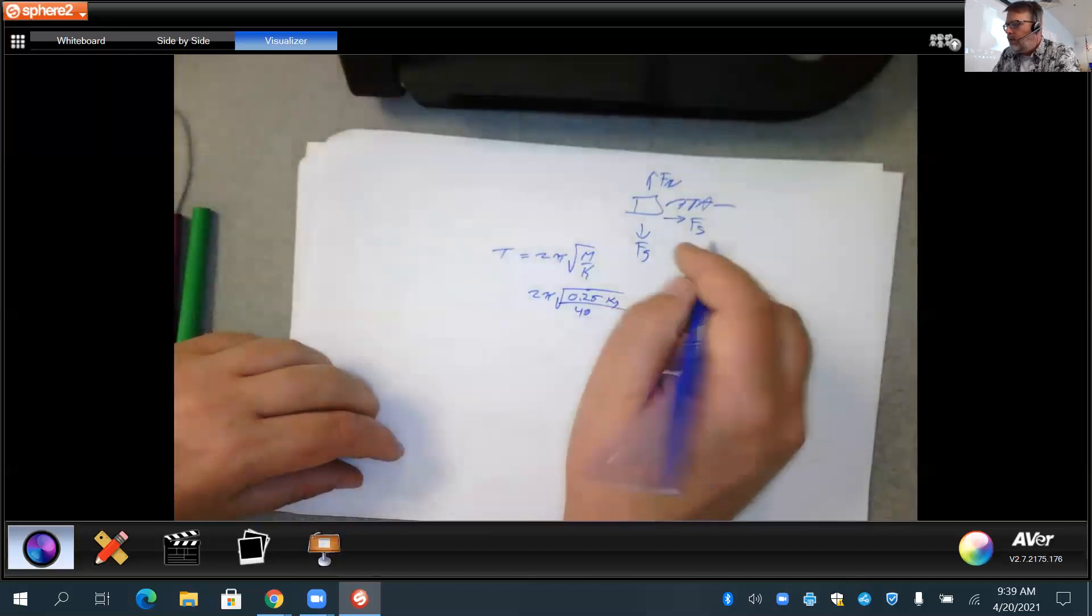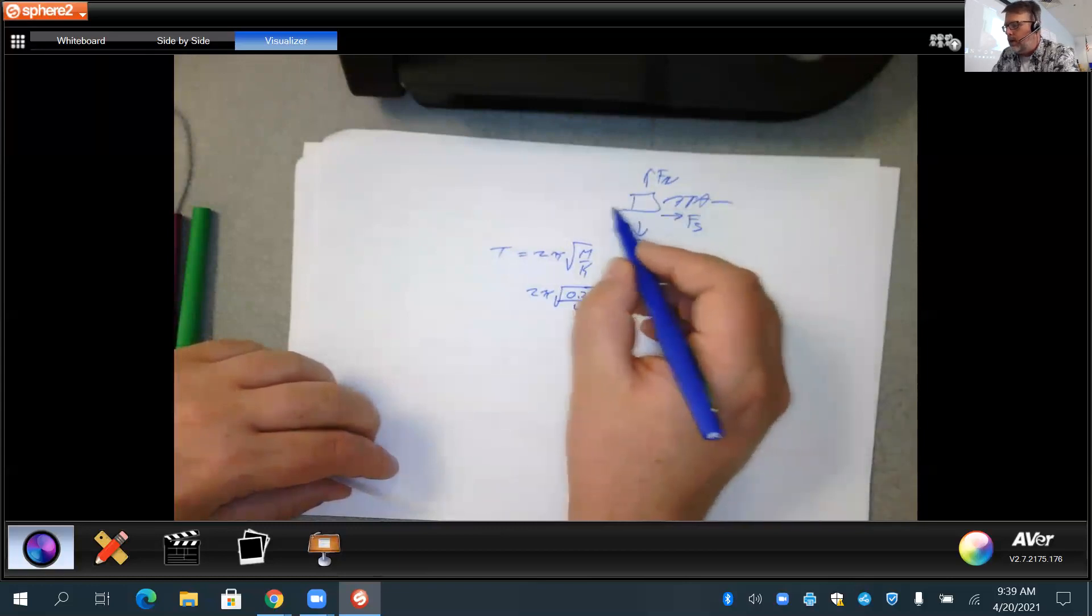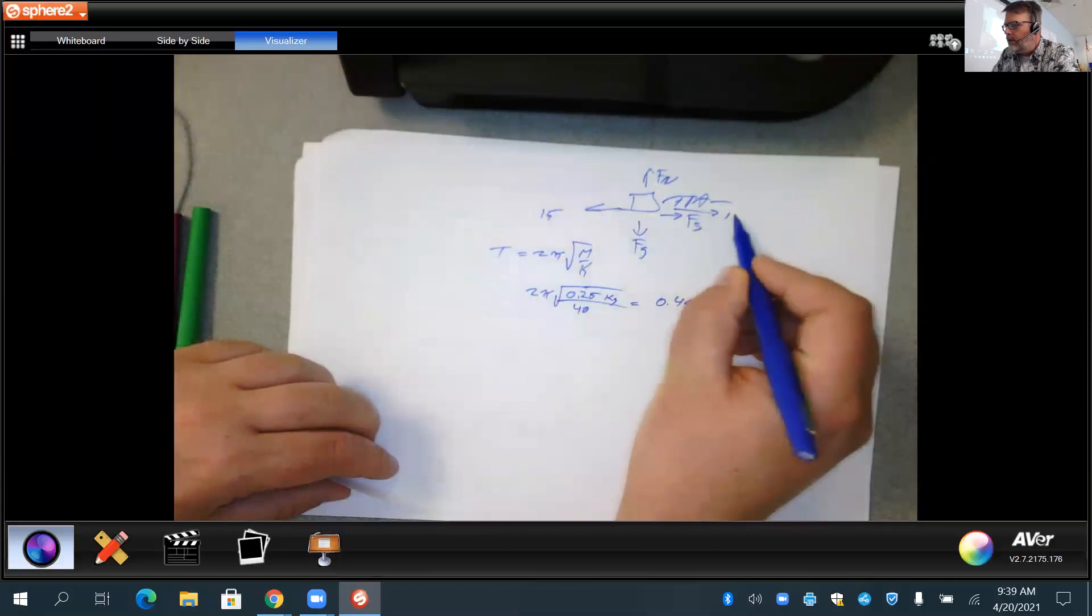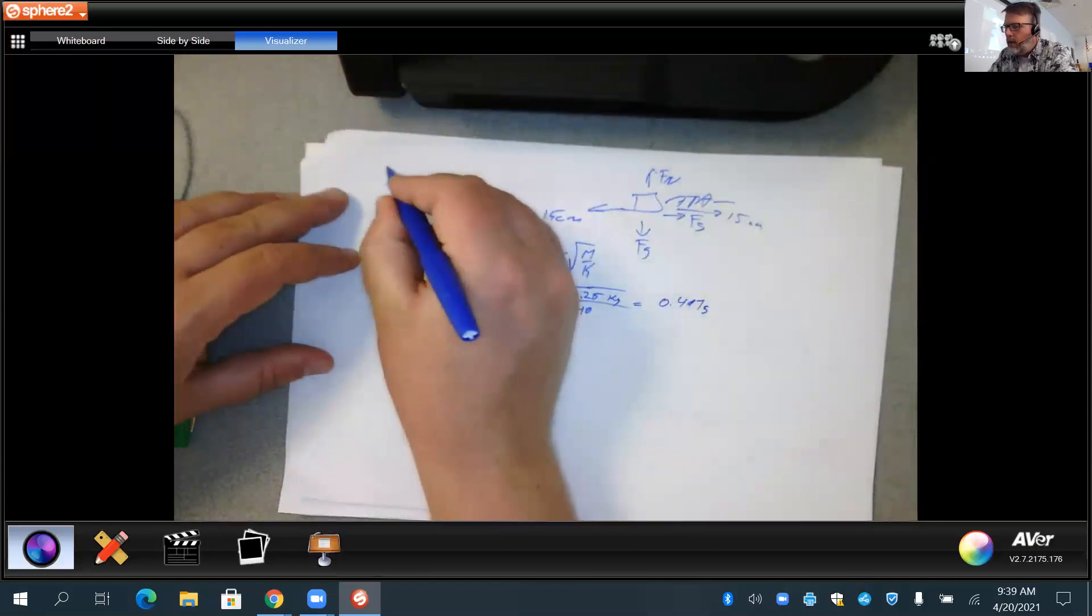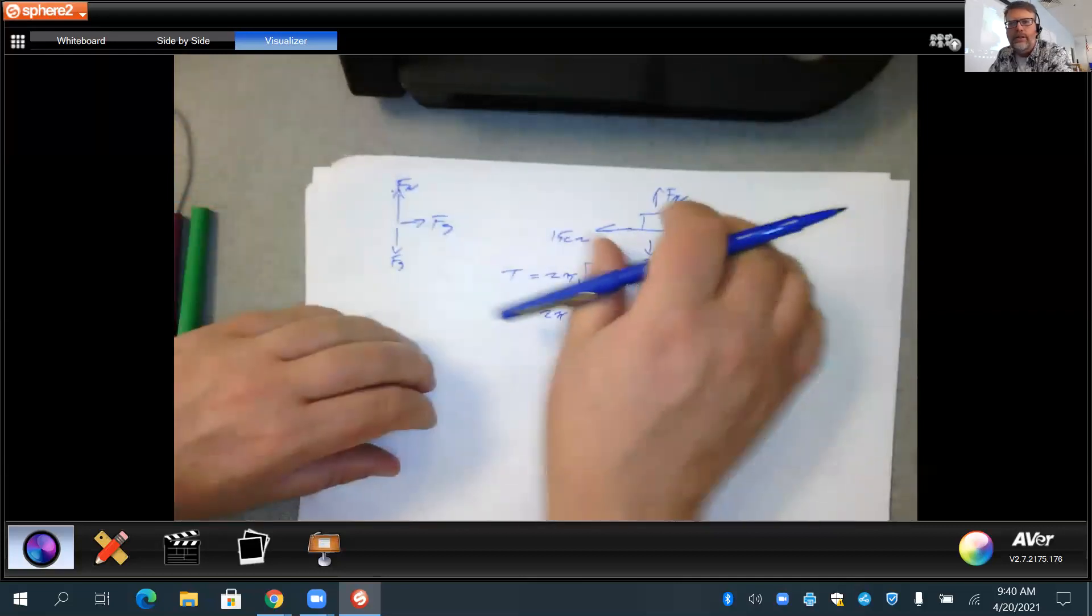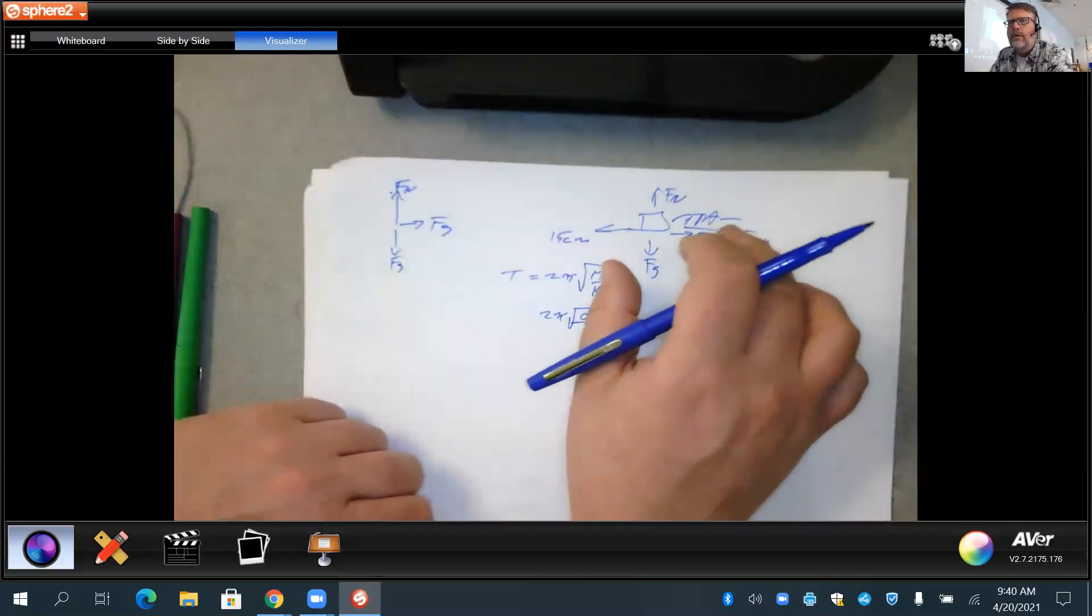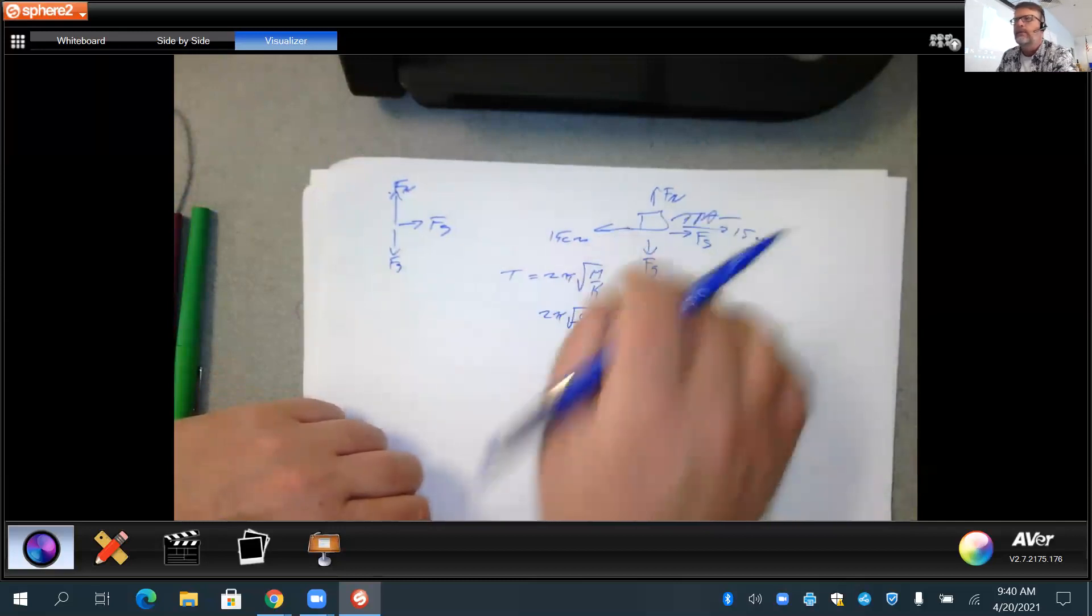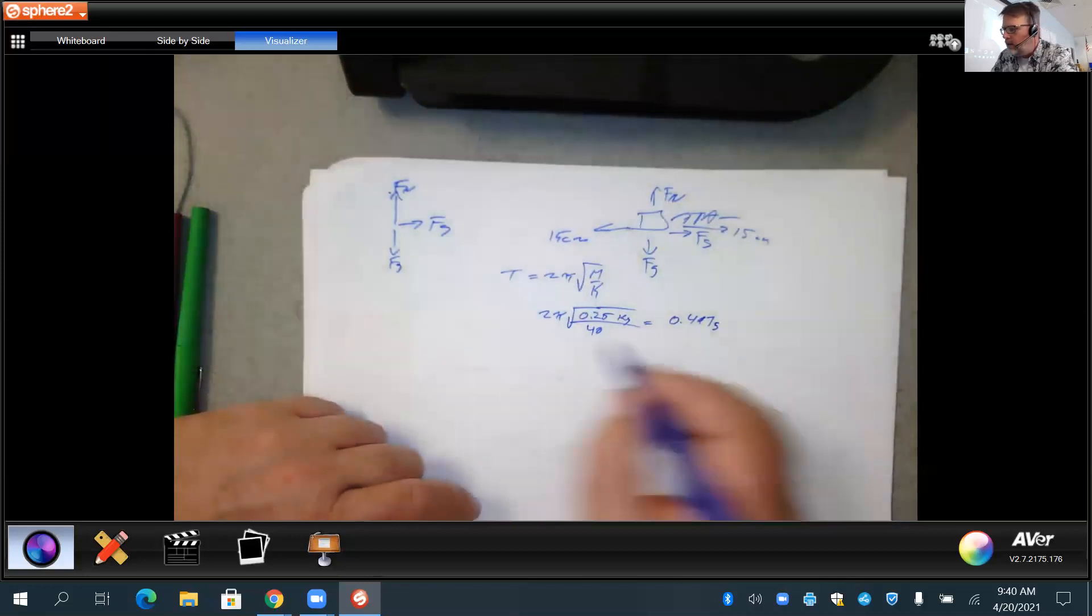All right. Part C, determine the speed of the block at position x equals 0. So that means it's at equilibrium. So x equals 0 was equilibrium. Remember we had 15 centimeters this way and 15 centimeters this way. I want to point out, if you have a force diagram, you had force normal, force the gravity, force the spring. The AP test says draw a force diagram. Do that and don't do any other sketches on this. This is your answer to part A, leave it untouched. Do a separate drawing for these other parts if you need to do some problem solving on the diagram.